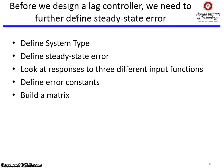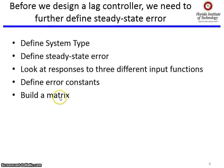Before we go into lag control design, we have to do some definitions. We're going to look at system type, steady state error, look at the responses to three different input functions, and then define the idea of an error constant. Once we have all that built, we're going to put it all in a nice matrix that's going to give us intuition as to what we need for controls.